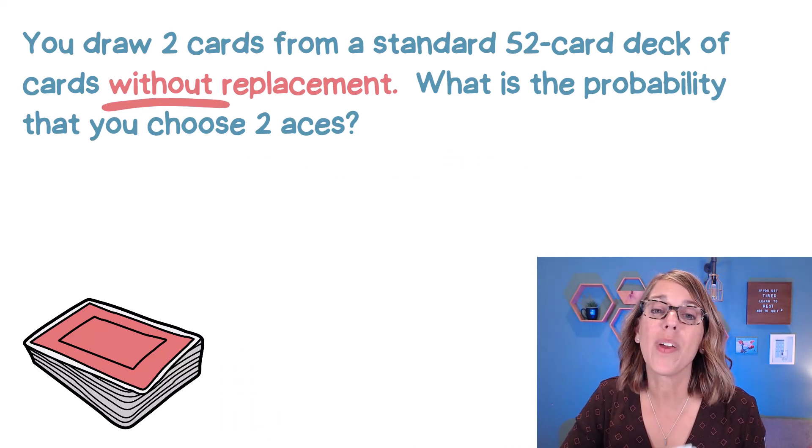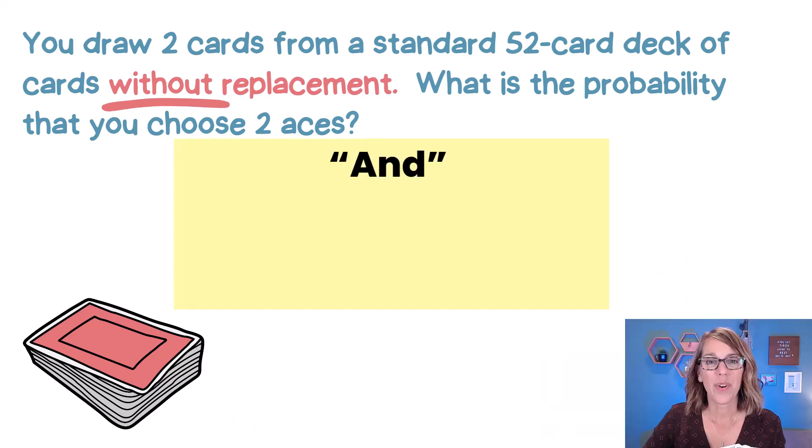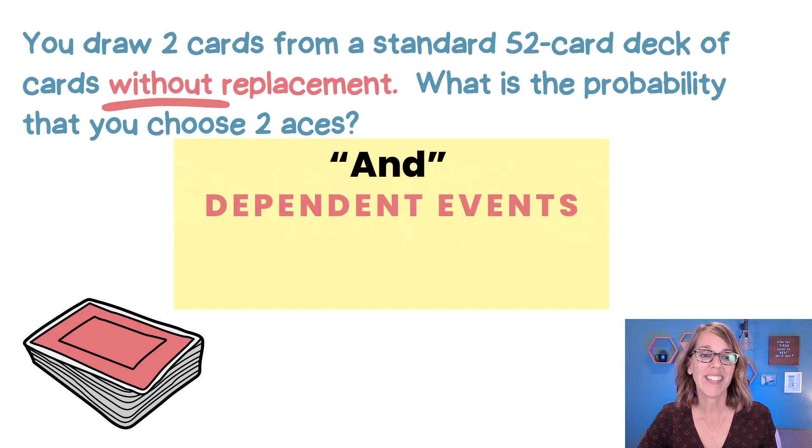Same example, but this time without replacement. We're going to need a variation of that and formula because when I do this without replacement, I'm going to draw that first card out of the 52, and then I'm going to put it aside. So when I go to draw the second card, there are now 51 cards left. It changes what happens in my second draw, making these dependent events.